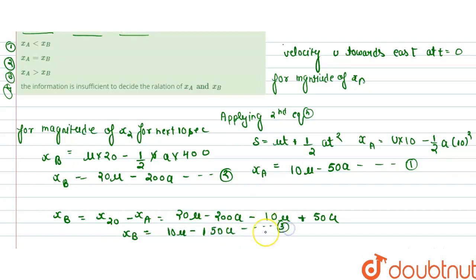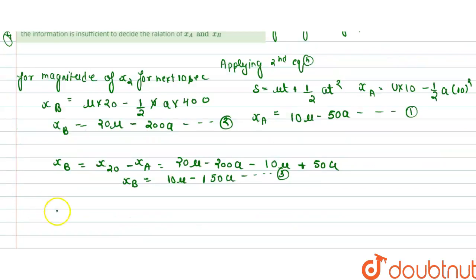From equation 1 and equation 3, we get that all information is not sufficient to determine the relationship.